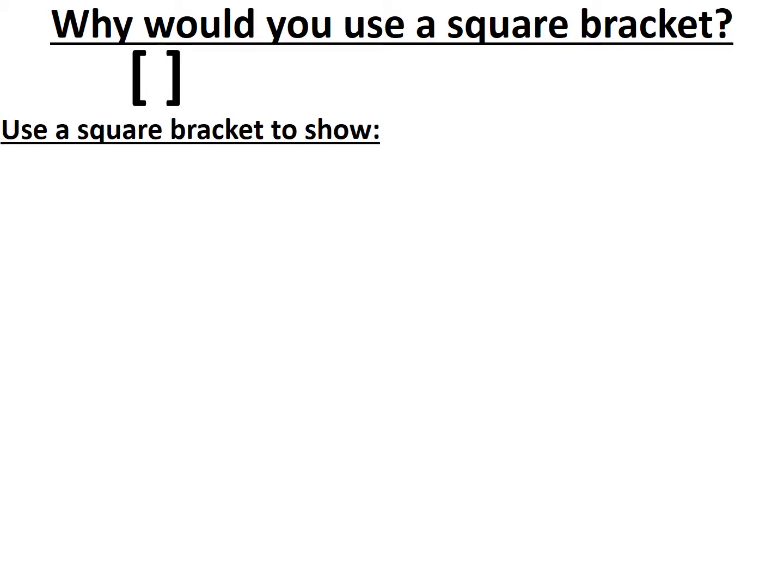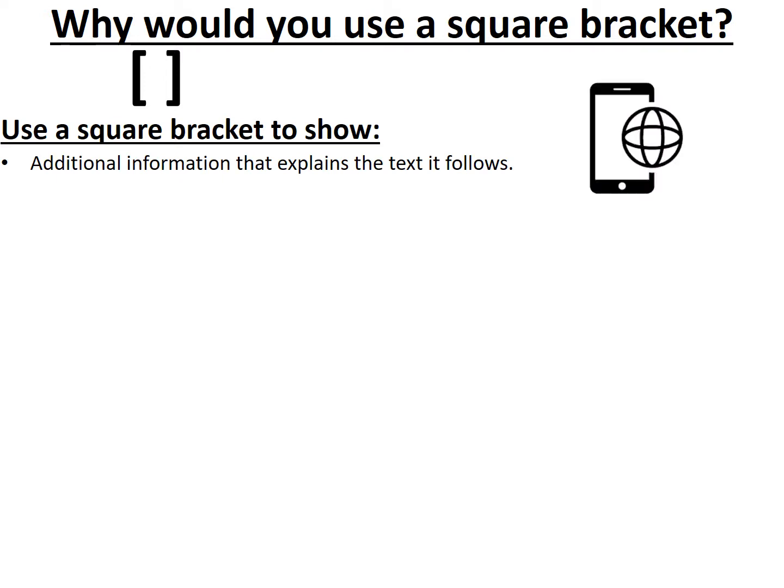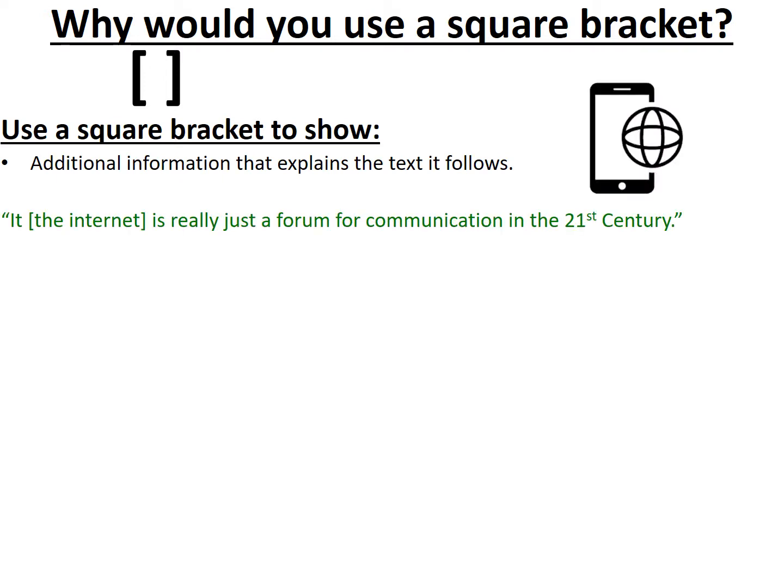We use a square bracket to show additional information that explains the text it follows. For example: 'It [the internet] is really just a forum for communication in the 21st century.' As you can see, I'm clarifying what 'it' means through the use of a square bracket — it's for clarification, to explain exactly what the subject of the sentence is, because 'it' is not precise enough on its own.